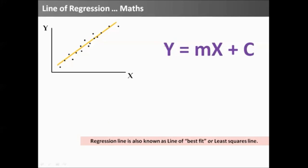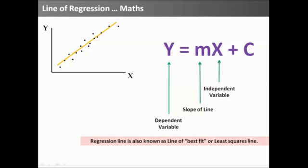This line can be represented by a mathematical equation, y equal to mx plus c, where y is the dependent variable, m is the slope of the line, x is the independent variable, and c is the intercept. We can also say intercept is the value of y when x equals 0. If x equals 0, y equals 0 plus c.